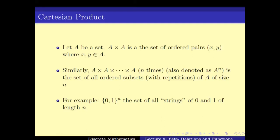For example, if A is the set {0, 1}, then {0,1}^n is the set of strings of 0s and 1s of length n. So {0,1}^2 is the set comprising {0,0}, {0,1}, {1,0}, and {1,1}. Similarly, {0,1}^3 is the set comprising all strings of length 3: {0,0,0}, {0,0,1}, {0,1,0}, {0,1,1}, {1,0,0}, {1,0,1}, {1,1,0}, and {1,1,1}.